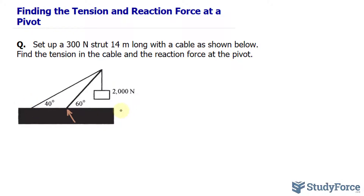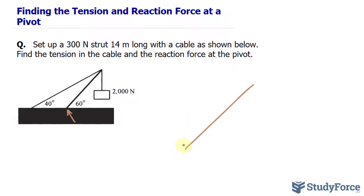There are several ways that you can start answering this question. I'll start with a free body diagram. The strut is right here, and I'll represent it by this diagonal line. The strut is exerting a force in the opposite direction.